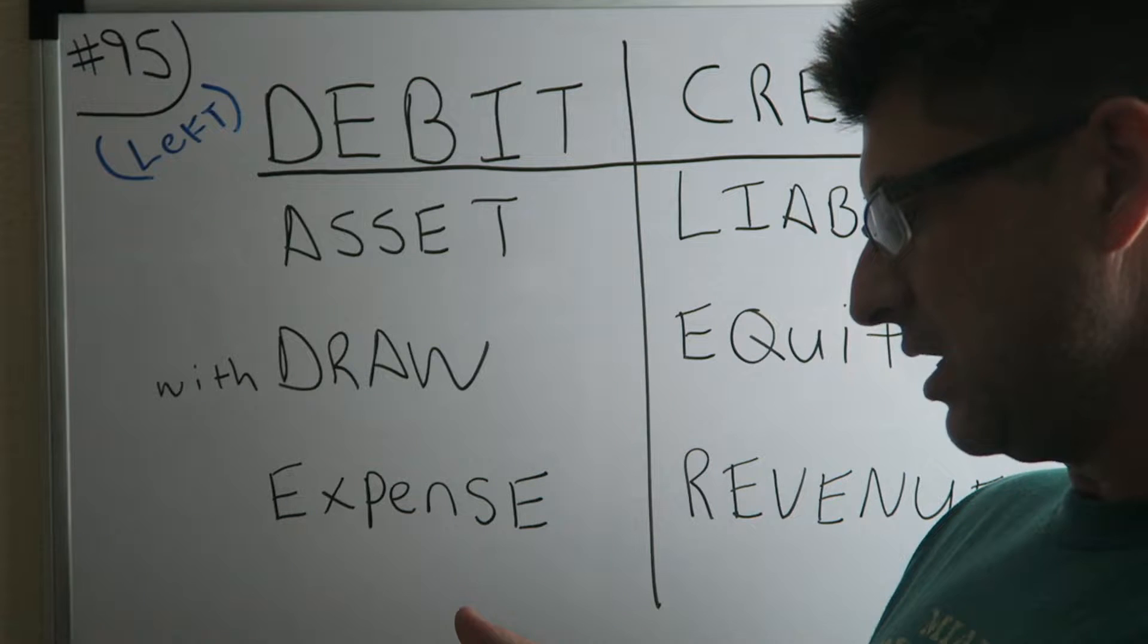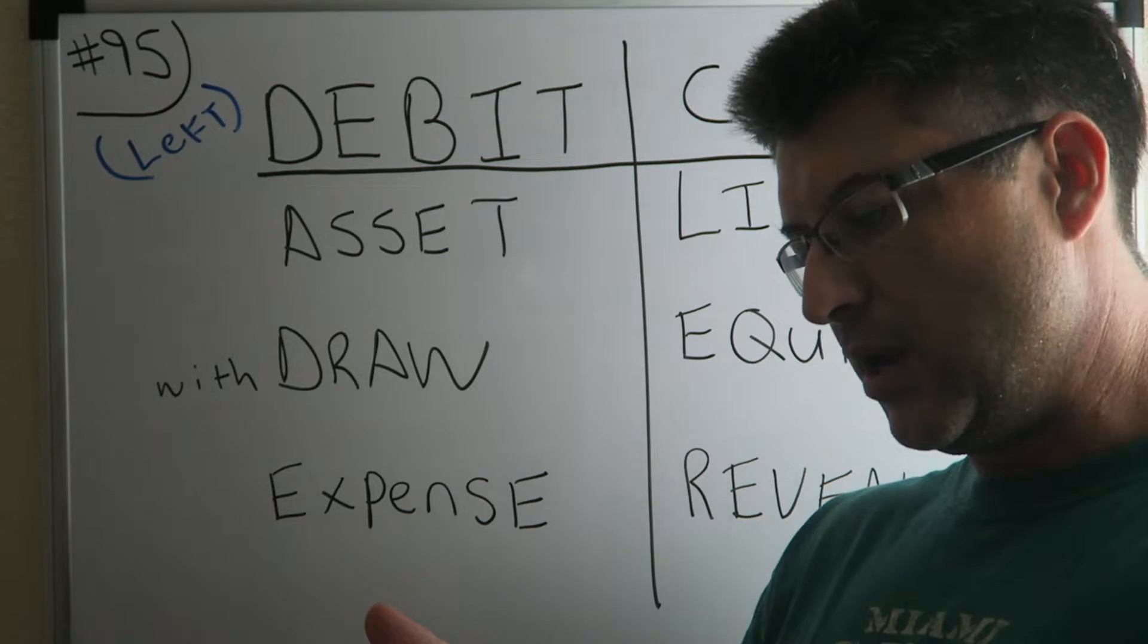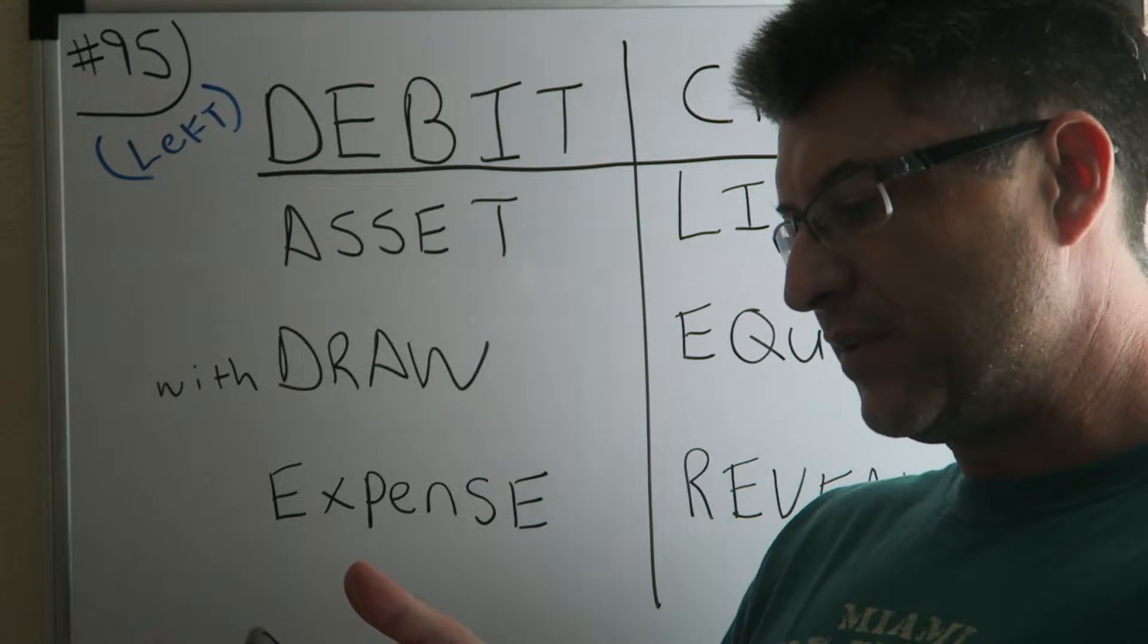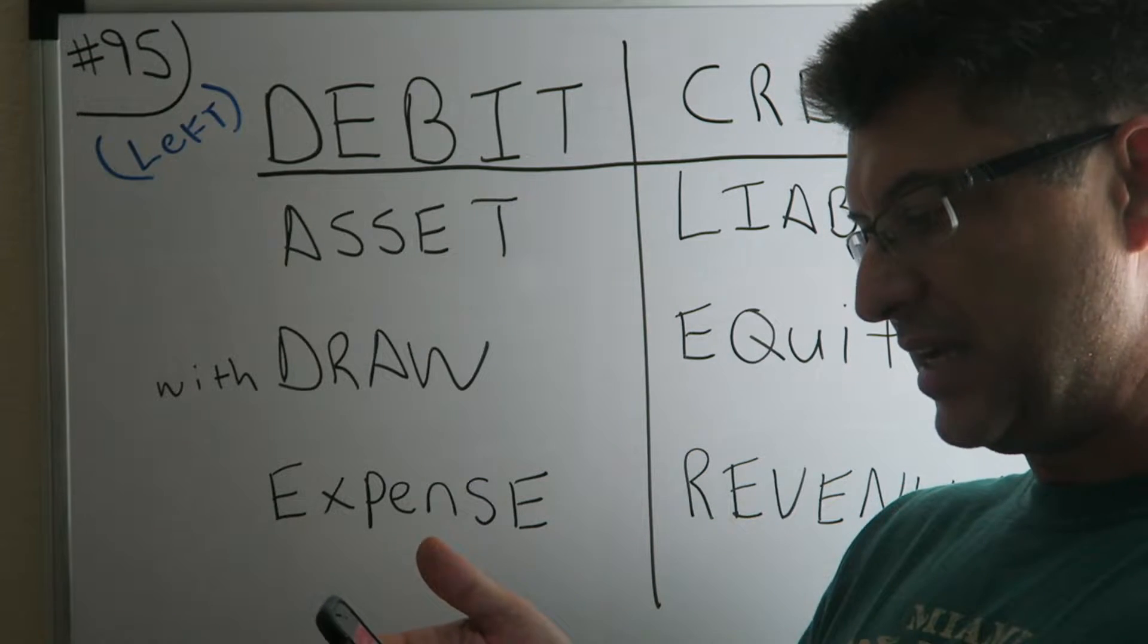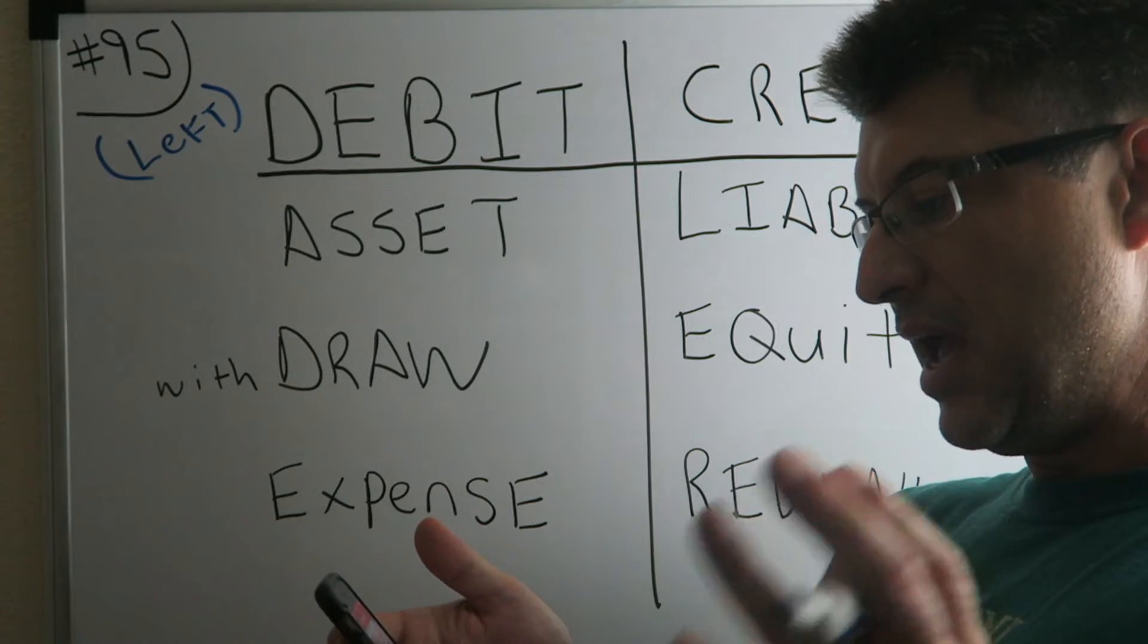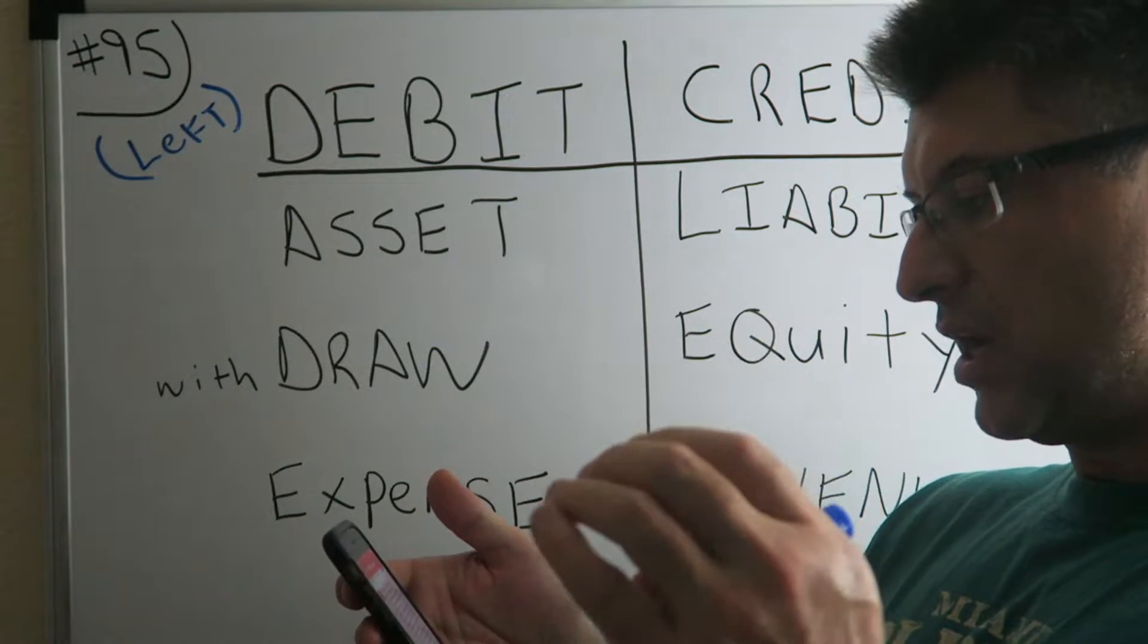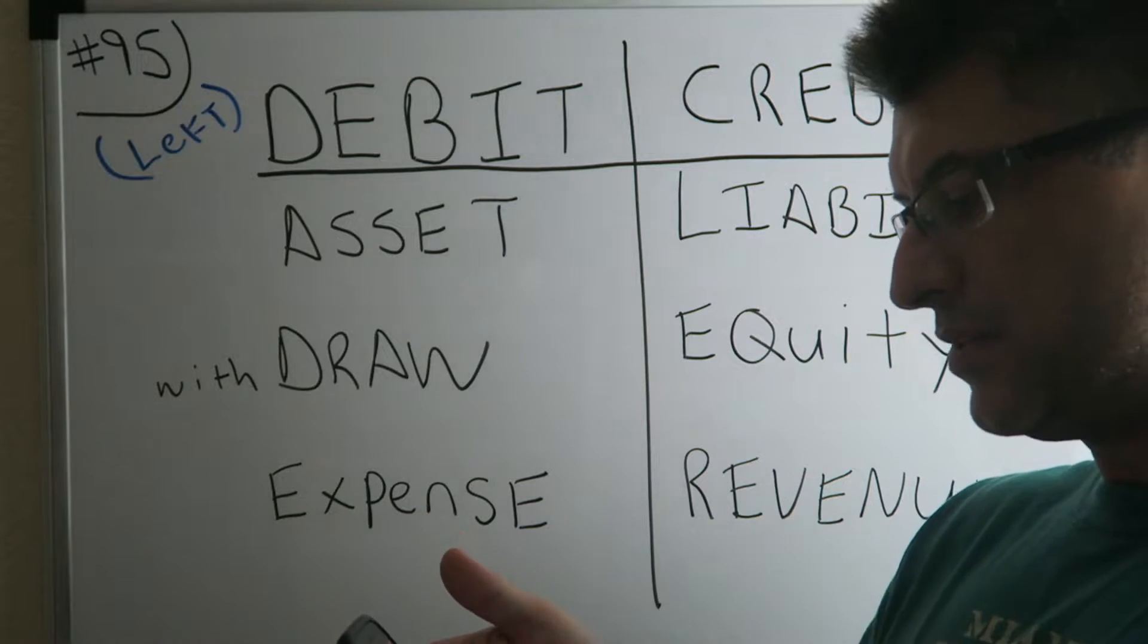What else does this tell you? Number two, it tells us the big six types of accounts: draws, withdrawals, expenses, assets, liabilities, equity, in quotes owner stock, and revenue. So yeah, it tells you the big six types of accounts.